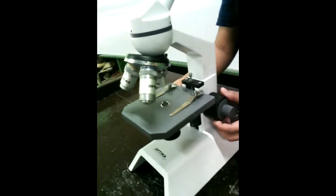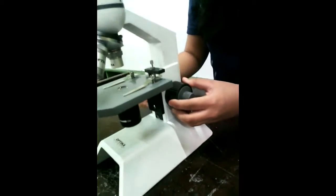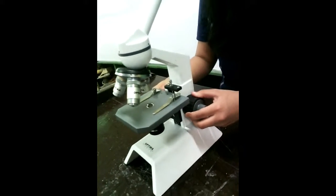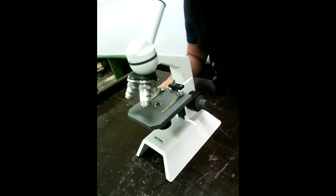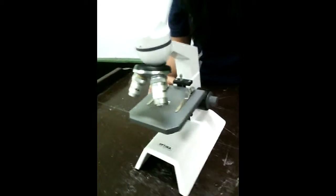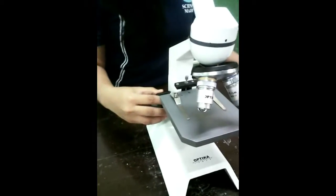This is the coarse adjustment knob, the upper larger knobs used to bring an object into focus only while it is being viewed under the low power objective or LPO.